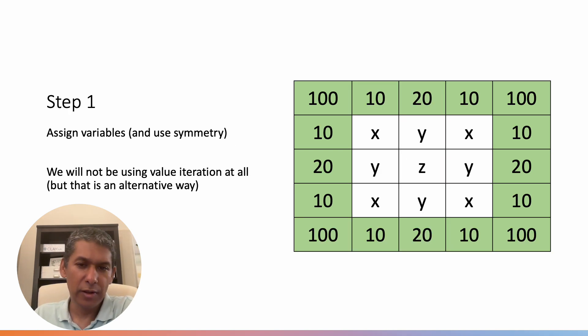So the first thing we do is we assign the variables for each of these states that we want to solve. And we use the symmetry to our advantage. So here we can see that the center state, we call it Z. But these four ones here, we call it Y and the same Y. And the four corner ones, we call it X because the situation is symmetric. So this X and this X and this X and this X are the same. In this case, we're not going to be using value iteration at all. But we could have used it. But in this case, we're just going to be using policy evaluation. And we will try to come up with equations involving these variables that are X and Y here.